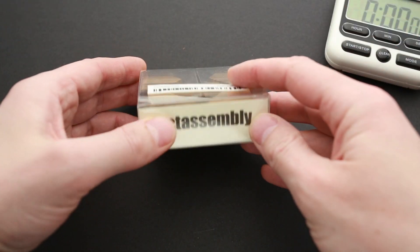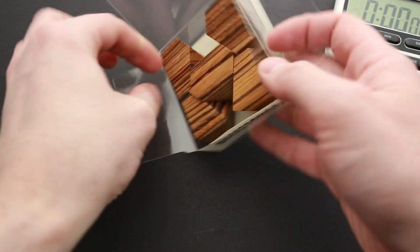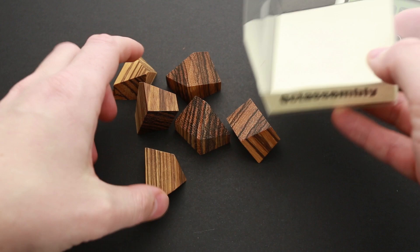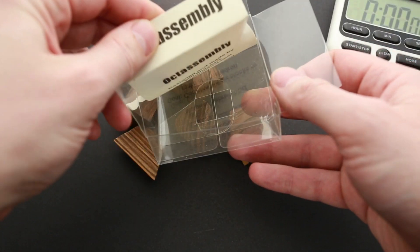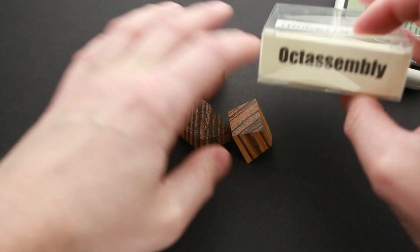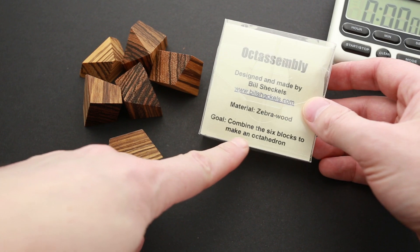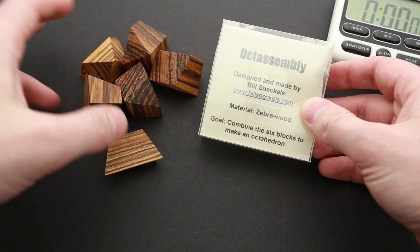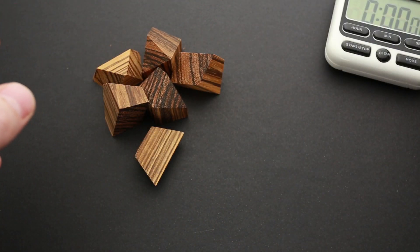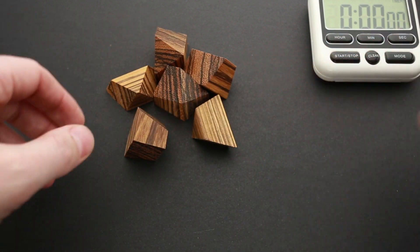It's time to find out how difficult is OctoAssembly puzzle. First, I have to remove it from the box. Let's see, there is no solution inside. There is no picture of assembled puzzle. There's only goal here: combine the six blocks to make an octahedron. So first, what I have to do is find out what octahedron is.